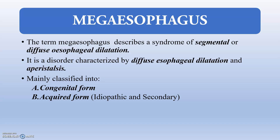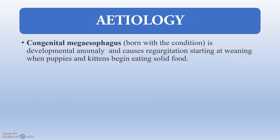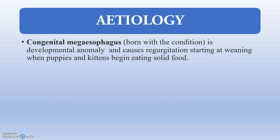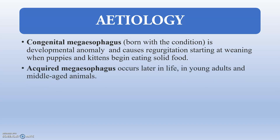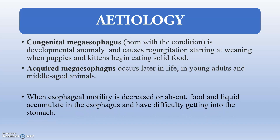There are several diseases that can lead to the acquired form of megaesophagus. Congenital megaesophagus is detected when the animal reaches weaning age and puppies or kittens begin eating solid food and start to regurgitate. Acquired megaesophagus is much more common and occurs later in life in adult or middle-aged animals. When esophageal motility is decreased or absent, food and liquid accumulate in the esophagus and have difficulty getting into the stomach — that is aperistalsis.